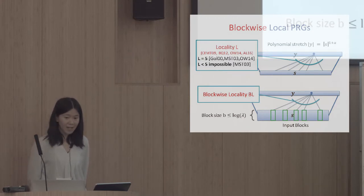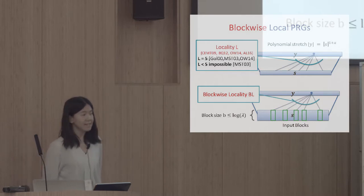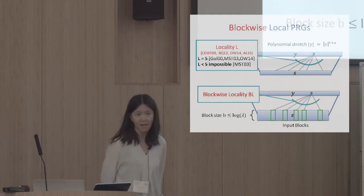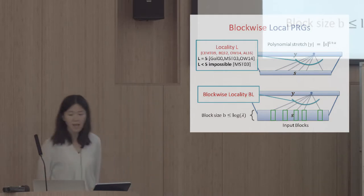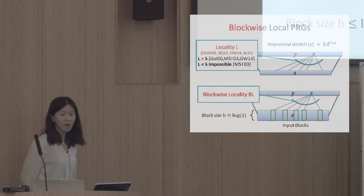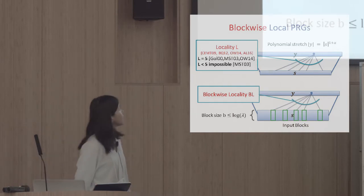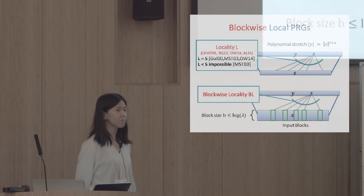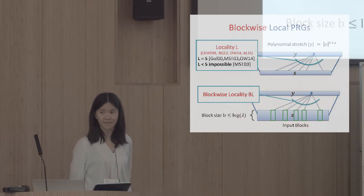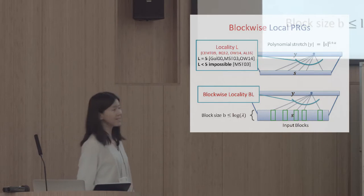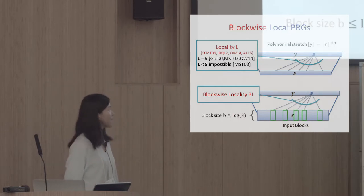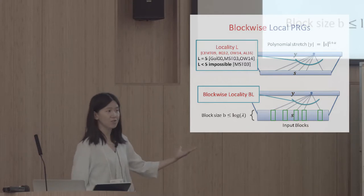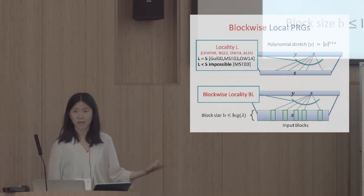If each block has size B capped at log lambda (the security parameter), then the actual locality of this PRG is block locality times B. So actual locality could be much higher than block locality. However, it is not the same as an arbitrary locality-(BL×B) PRG, because it has the special structure of being local with respect to input blocks.